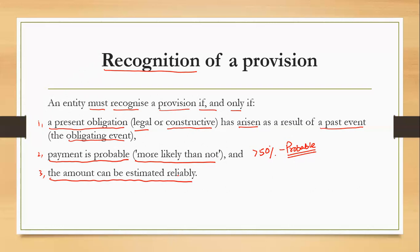For example, if there is a present obligation as a result of a past event, and payment is probable, but the amount cannot be reliably estimated, then you cannot recognize a provision — and in that situation you may have to disclose a contingent liability instead. So to recognize a provision: present obligation, probable payment, and reliably estimable amount are all required.